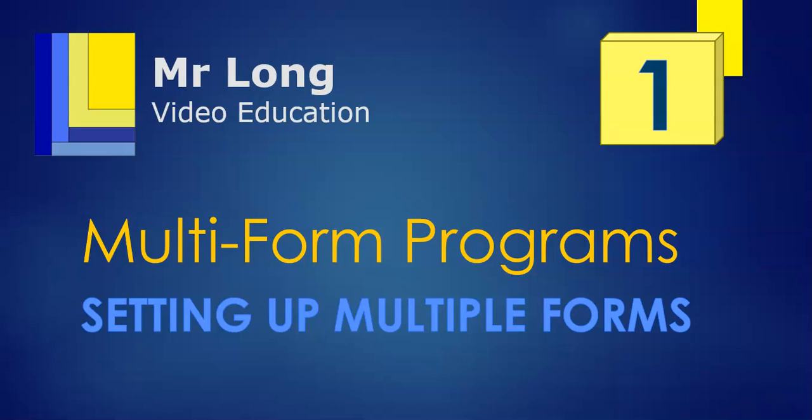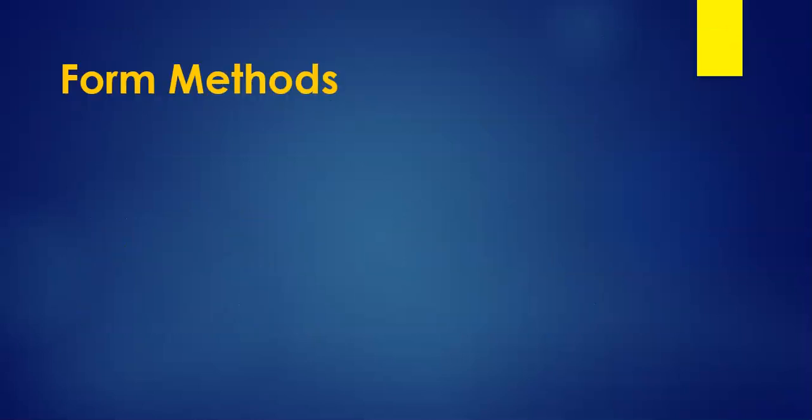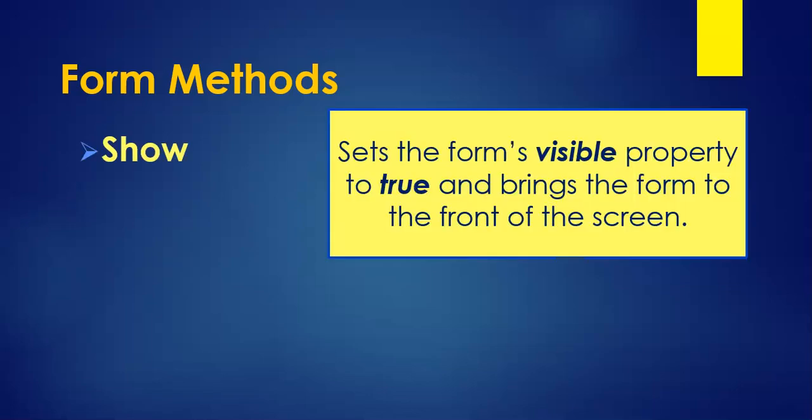Let's learn about the methods we are going to use in multi-form programs. The first one is the Show method. When you call Show on a form, it sets its visibility property to true and brings that form to the front. That's what we're going to use when we want to make another form pop up.